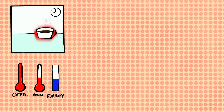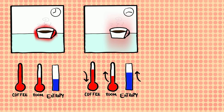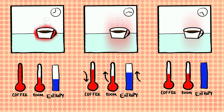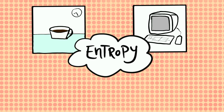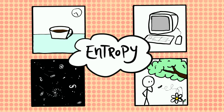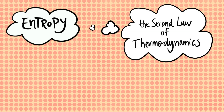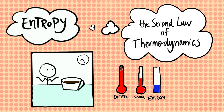Heat spontaneously flows from hotter to colder bodies and not the other way around. By doing so, temperature equilibrates and entropy increases. Entropy is a universal and profound concept central to understanding so many systems, from computers to living beings and even the entire universe. This is because entropy underlies a truly fundamental and general law of physics — the second law of thermodynamics — which states that entropy increases over time in isolated systems as they tend to equilibrate, much like the temperature of your coffee equilibrated with that of the room.